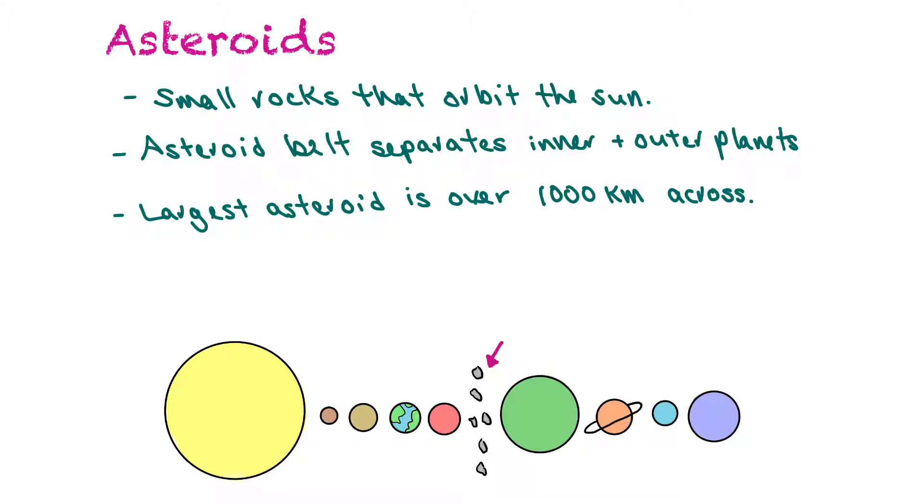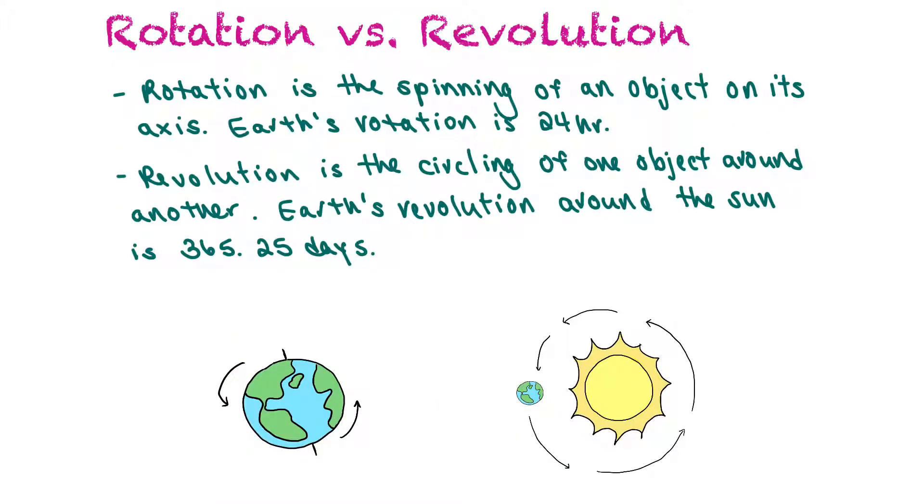Asteroids are small rocks in comparison to planets that orbit the Sun. The asteroid belt is a group of asteroids that separates the inner and outer planets, and the largest known asteroid is over a thousand kilometers across.